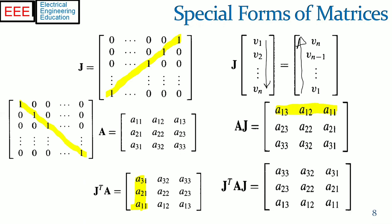Finally, the effect of the product J transpose A J is to reverse the order of each row and column, thereby reflecting each element of A about the central element.